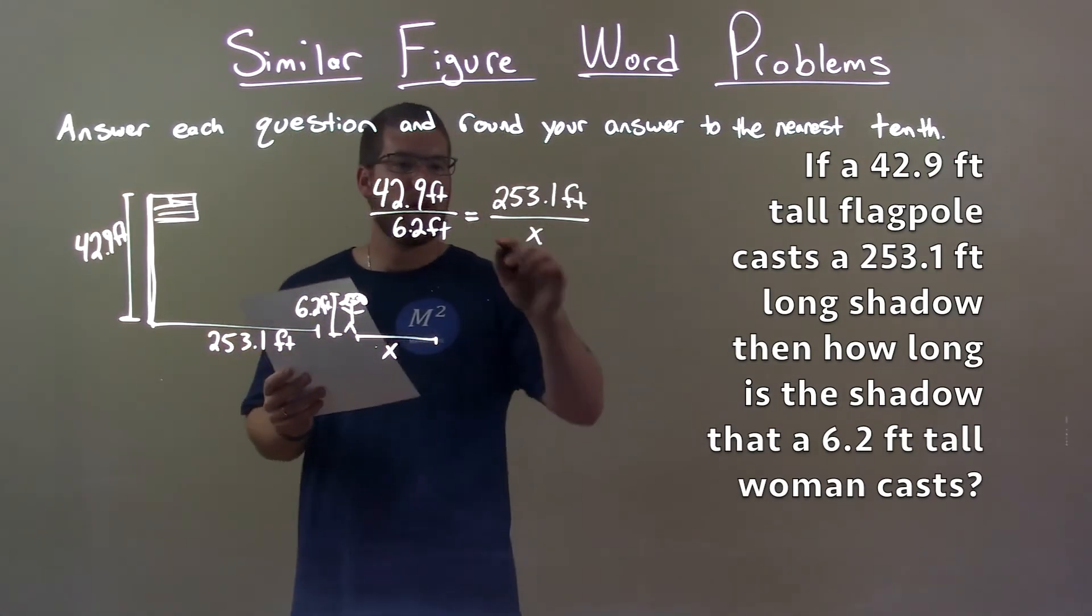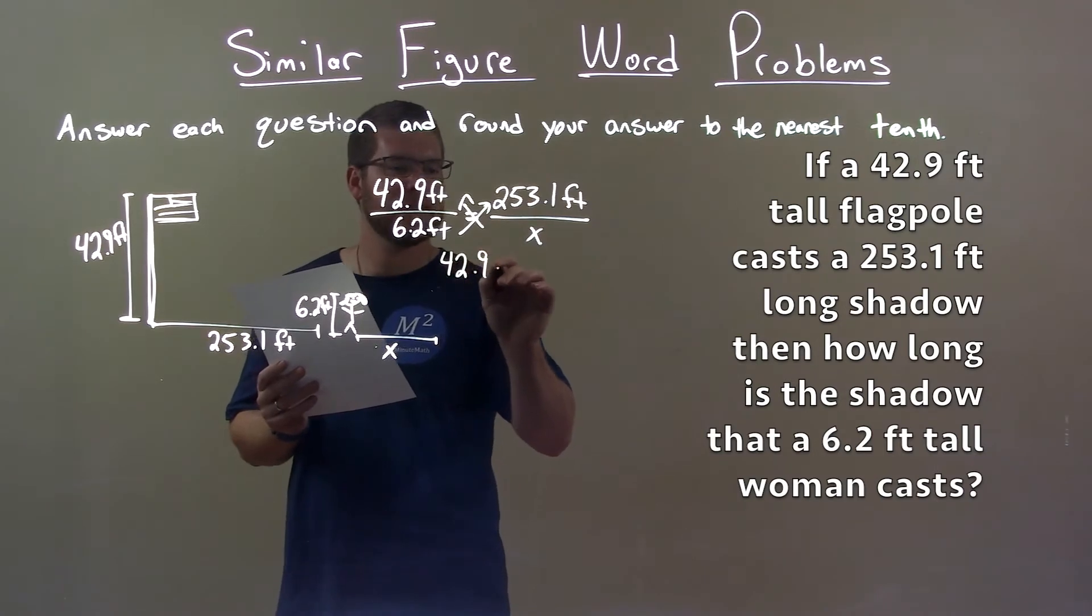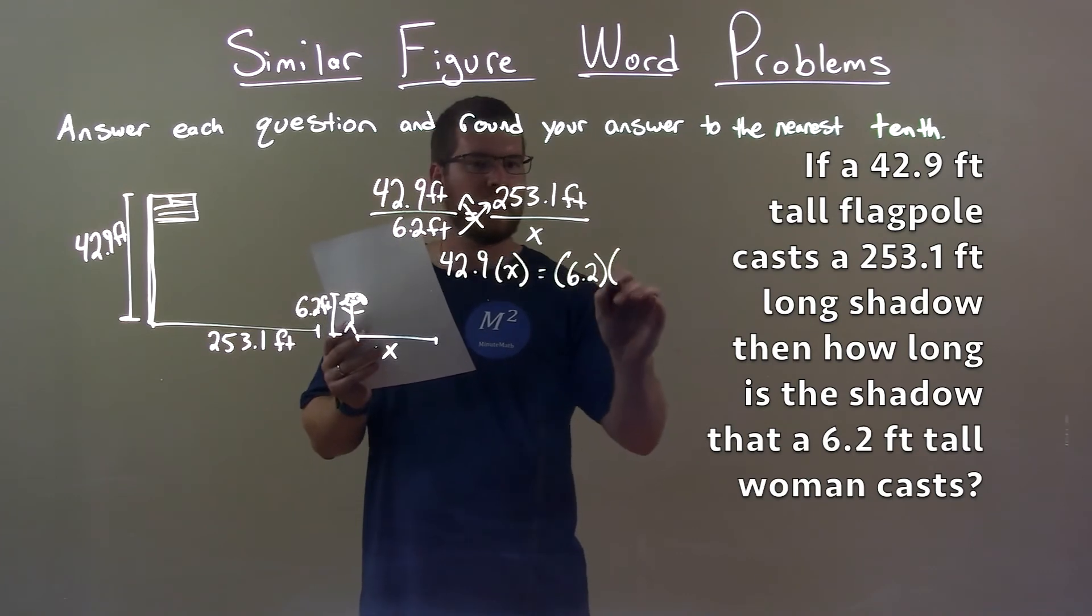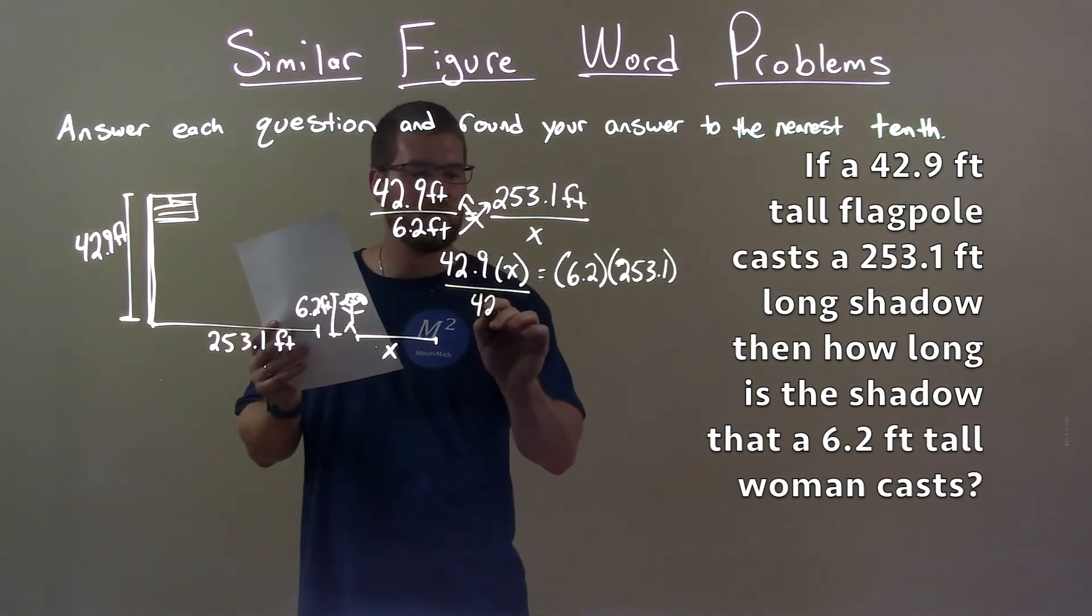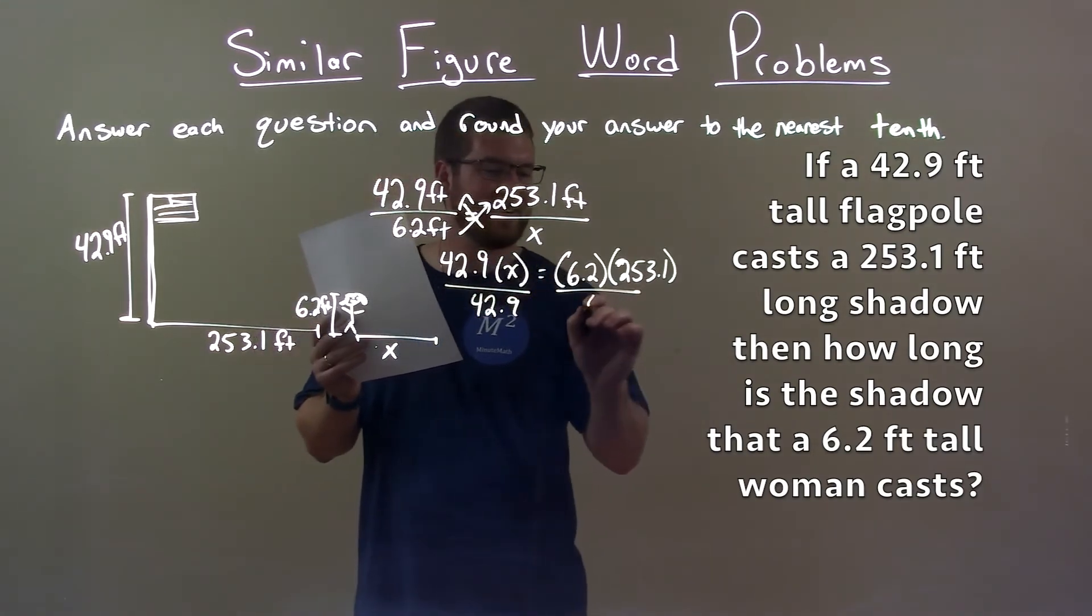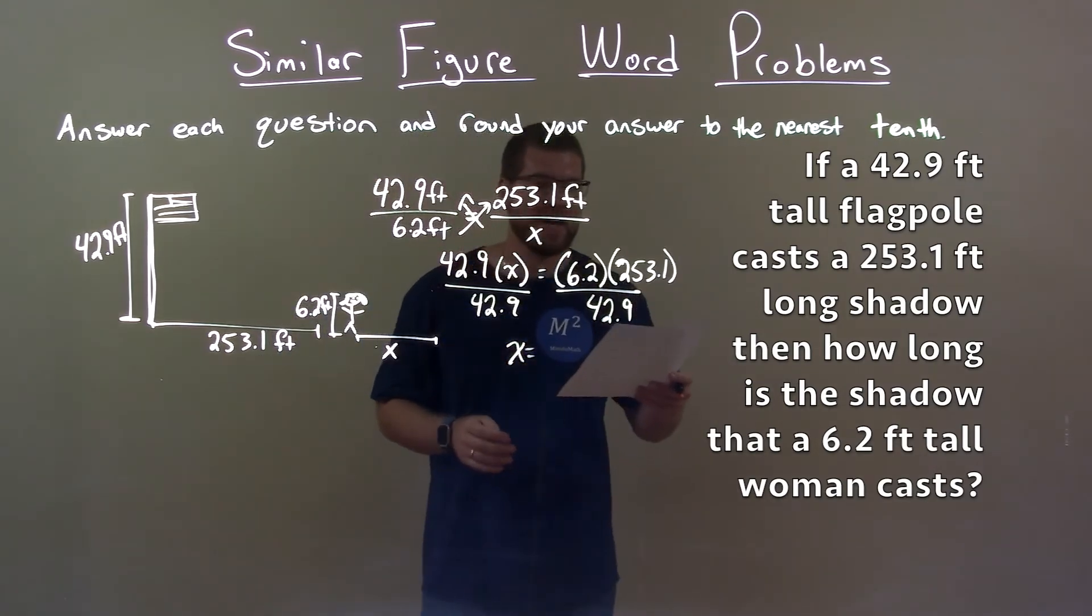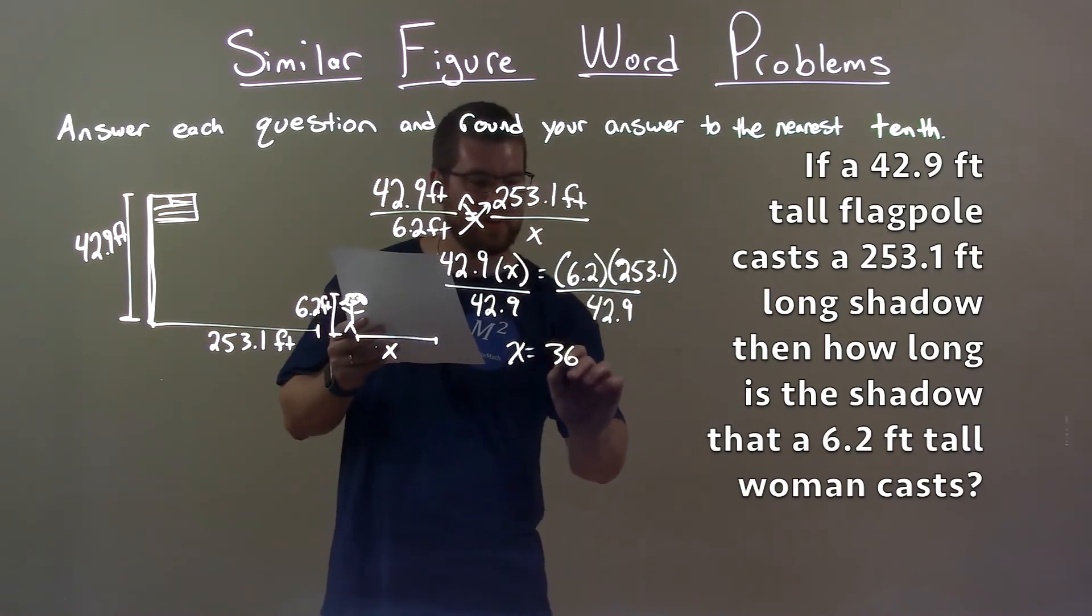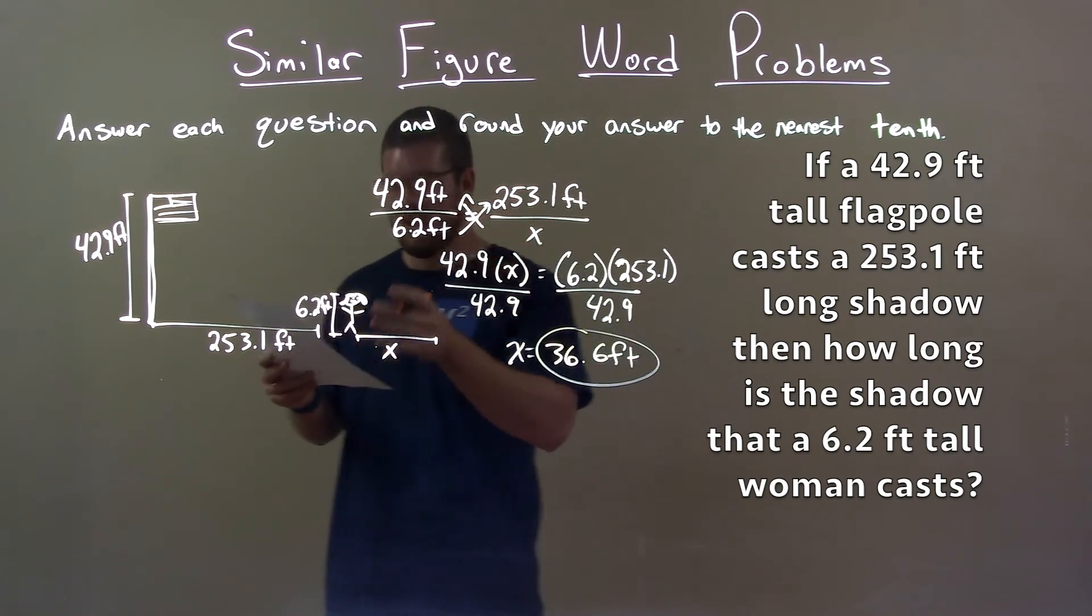To solve, we cross multiply. 42.9 times x should equal 6.2 times 253.1. We divide both sides by 42.9. This gives us x by itself. And 6.2 times 253.1 divided by 42.9 is 36.6 feet. That is the length of the shadow that the woman casts.